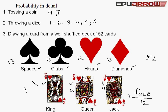For a coin toss, if the condition is that a head comes up: there are 2 total outcomes and 1 favorable outcome for head. So the probability of getting a head is 1 by 2.